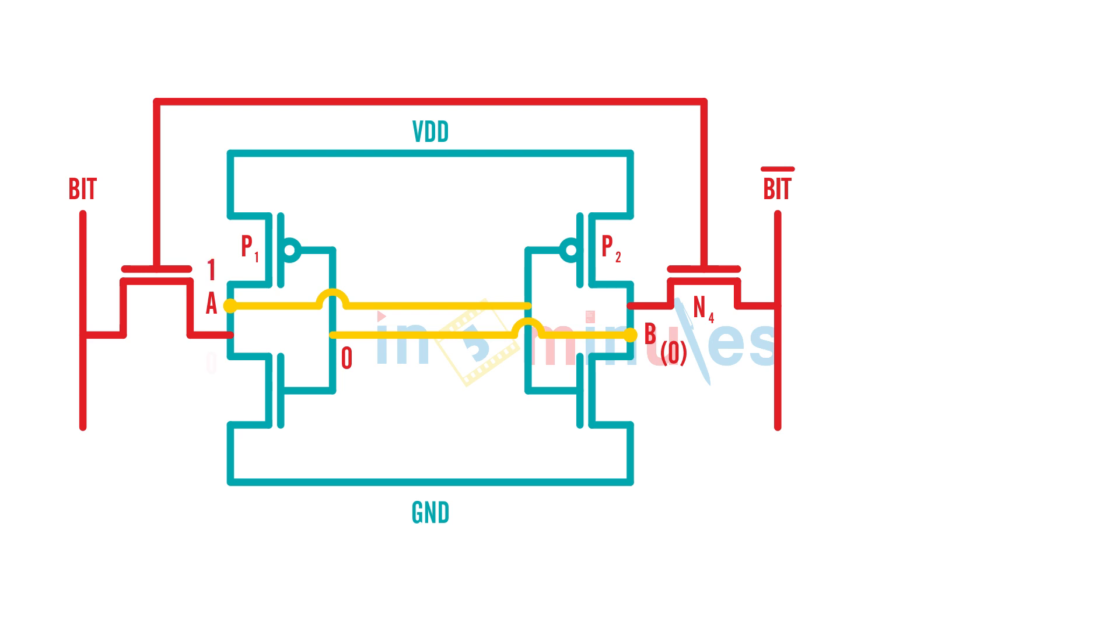So A which was initially at zero now changes to one because of B which we wrote as zero. In summary, what we understood - because the circuit is completely symmetric - is for read and write stability, how do we size our transistors? Remember the circuit is symmetric. That's the trick you need to remember.